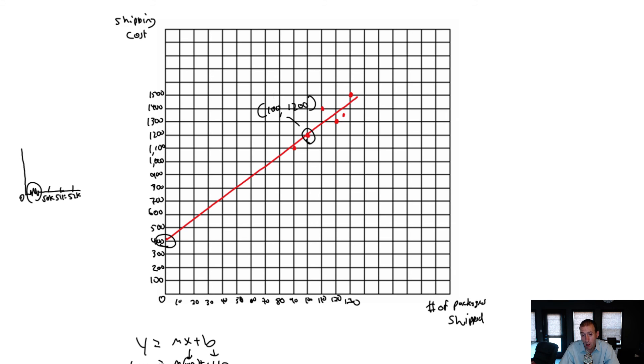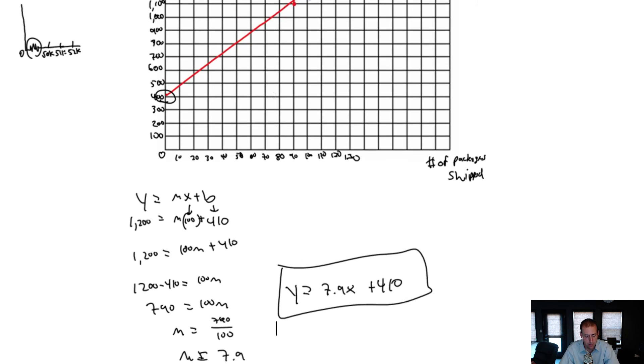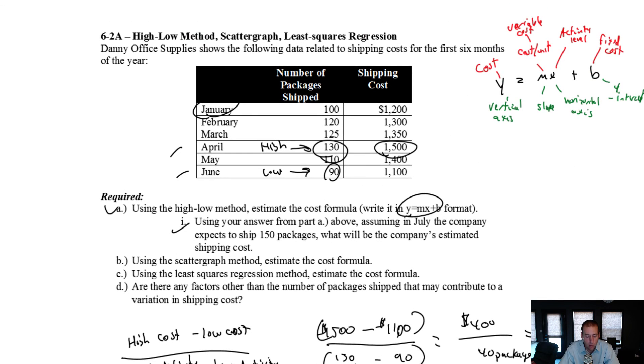We're going to take a page from the scatter graph method with our next method called least squares regression. We're going to draw a regression line. What a regression line does is it takes the human element out of it—it mathematically solves for the best possible line through the data. We'll do that in our next video.